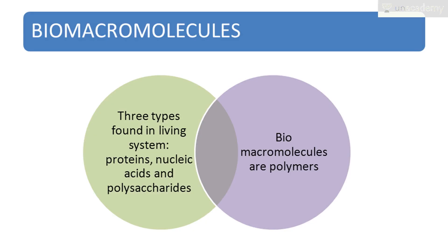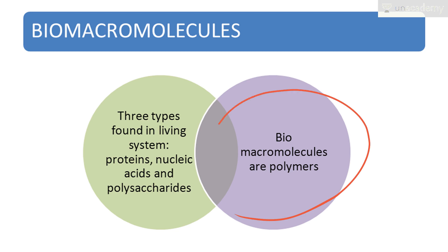Now we will talk about biomacromolecules. There are three types found in living systems: proteins, nucleic acids and polysaccharides. Biomacromolecules are basically polymers — that is, they have high molecular mass.